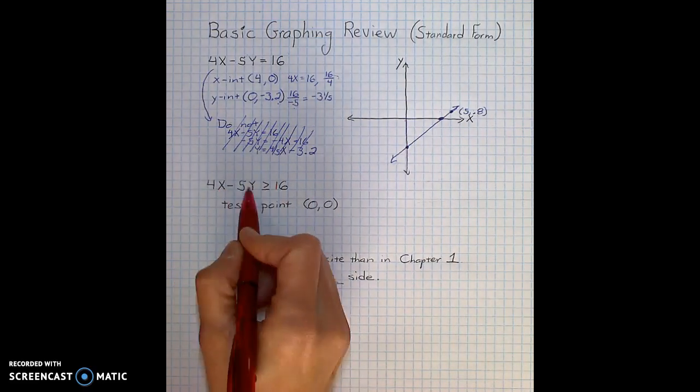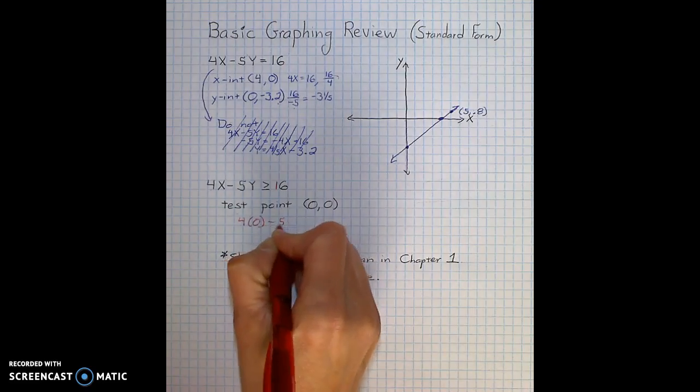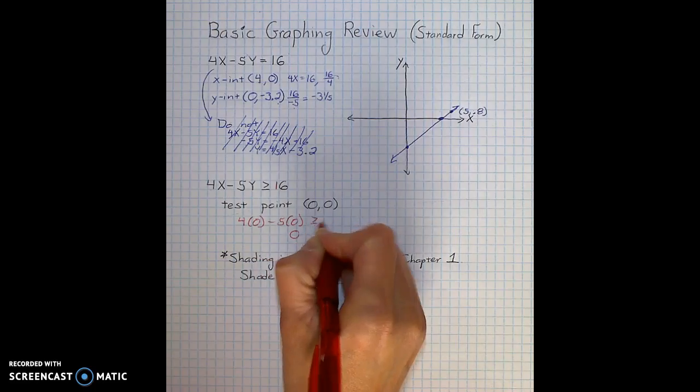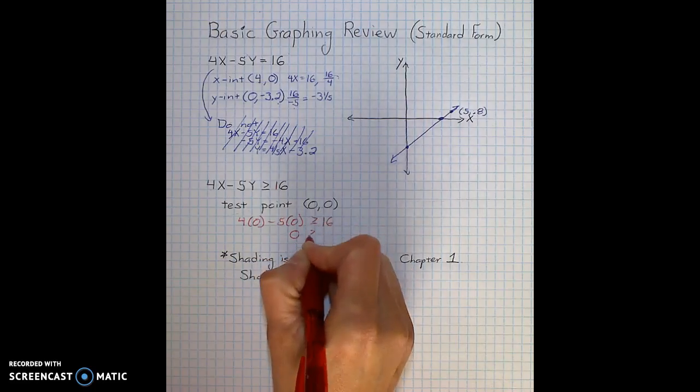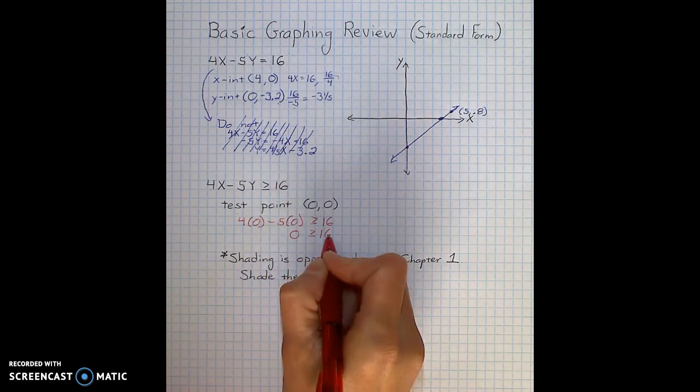I substitute 0 into the inequality. 4 times 0 minus 5 times 0 is 0. I want to know, is that greater than or equal to 16? Well, obviously 0 is not greater than or equal to 16.